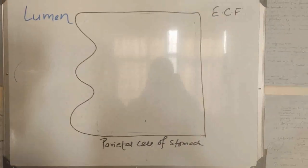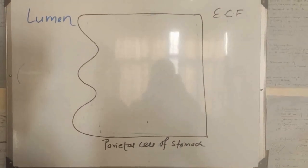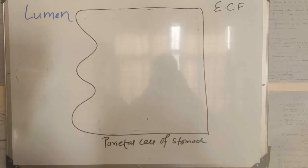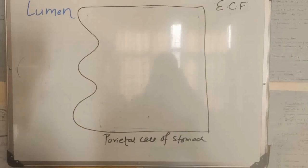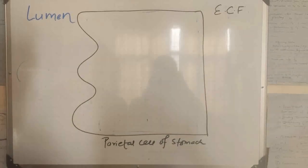Today we are going to discuss the mechanism of secretion of HCl, which is secreted by parietal cells of the stomach. We all know that HCl is an important constituent of gastric juice. Today we are going to see how it produces HCl.